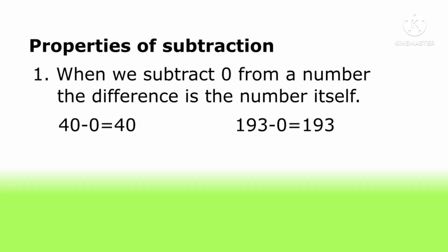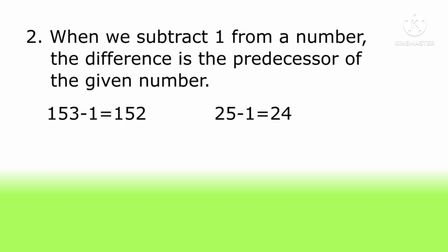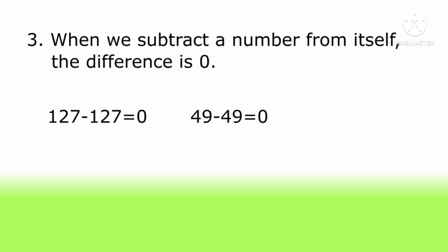Properties of subtraction. When we subtract zero from a number, the difference is the number itself. When we subtract one from a number, the difference is the predecessor of the given number. When we subtract a number from itself, the difference is zero.